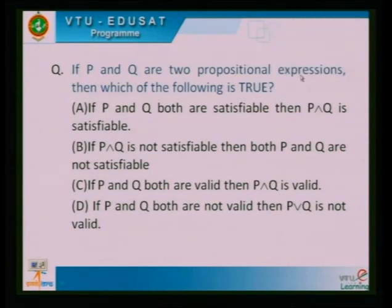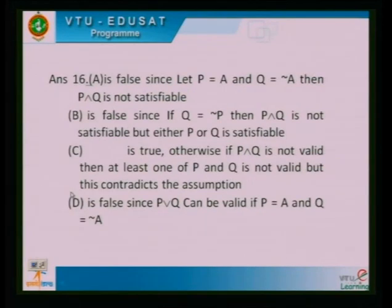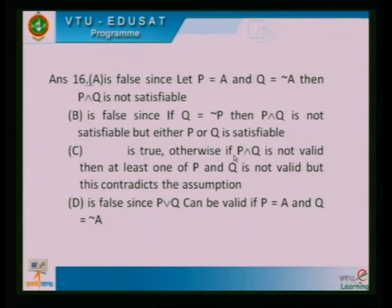If p and q are two propositional expressions, which of the following is true? (A) If p and q both are satisfiable, then p ∧ q is satisfiable — false; let p = a and q = ¬a, then p ∧ q is not satisfiable. (B) If p and q both are not satisfiable, then p ∨ q is not satisfiable — false; either p or q could be satisfiable. (C) If p and q both are valid, then p ∧ q is valid — this is true. (D) If p and q are both not valid, then p ∨ q is not valid — false since p and q can each be false while p ∨ q remains true. Therefore, the third statement is the correct answer.